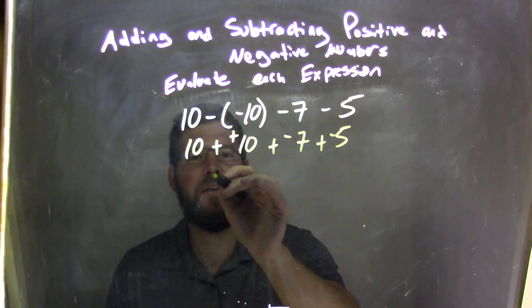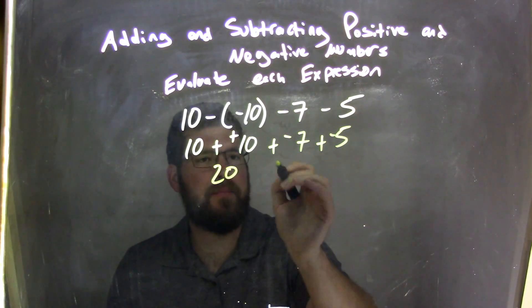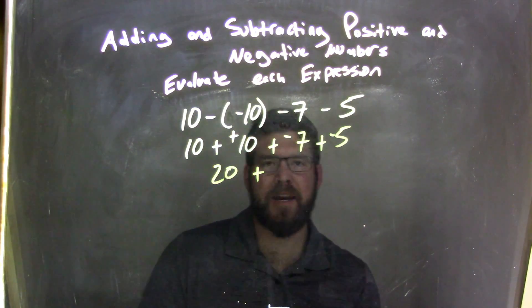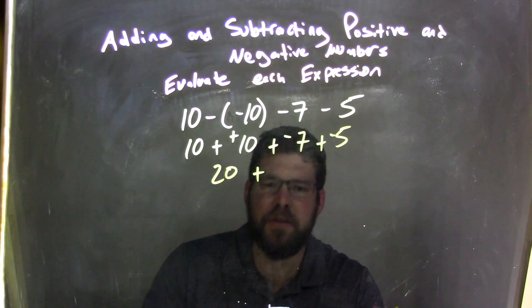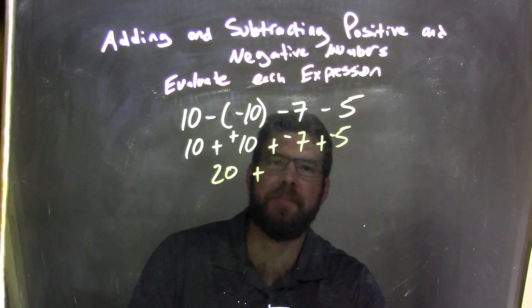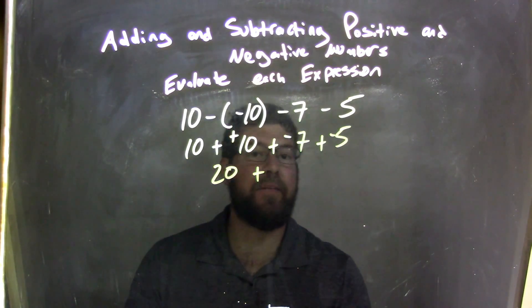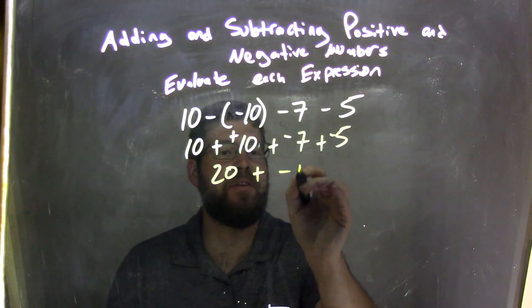Why don't I combine the 10 and the 10, add it together as 20, fairly simple. And then here I have my two negatives I'm going to add together to make a larger negative number. So negative 7 plus negative 5 comes out to be negative 12.